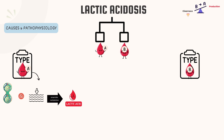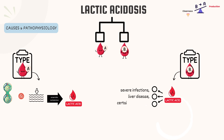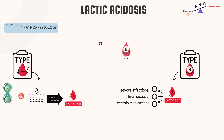Type B lactic acidosis is where the excess lactic acid is not directly related to oxygen shortage. Instead, it results from various underlying conditions such as severe infections, liver disease, certain medications like metformin, or toxins. These conditions can disrupt the body's ability to metabolize lactic acid properly.